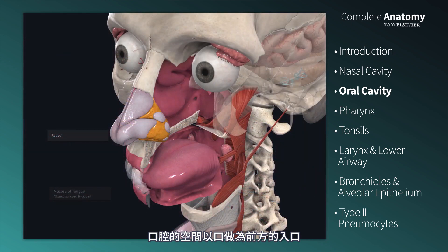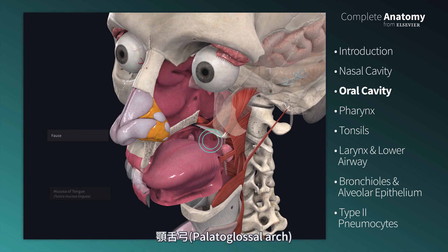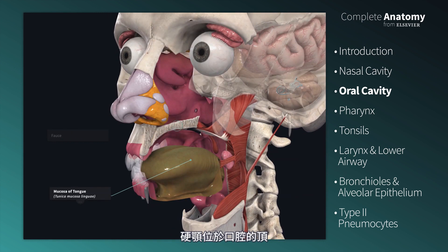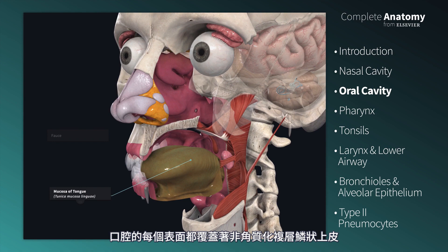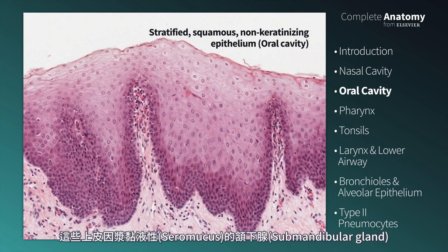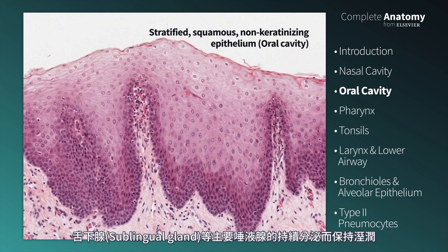The oral cavity is a single chamber with the mouth at its front entrance, and the fauces, formed by the palatopharyngeal and palatoglossal arches with the uvula in the middle, as its back exit. The tongue lies at the floor, the hard palate at the roof, and the cheeks are the walls. Each surface of the oral cavity is lined by a stratified squamous non-keratinized epithelium, kept wet by the constant secretions of the mixed seromucous submandibular and sublingual major salivary glands.